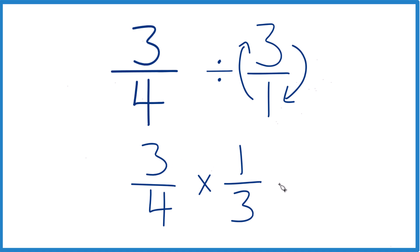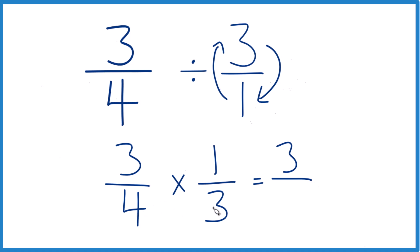So now with fractions, when we multiply, multiply the numerators. 3 times 1, that gives you 3, and 4 times 3, that gives us 12.